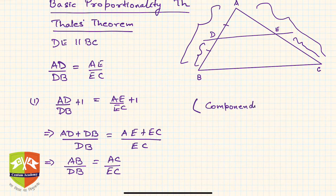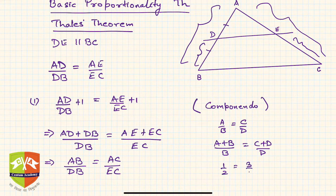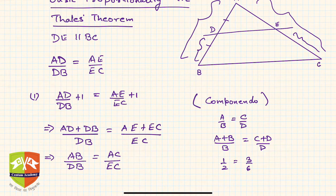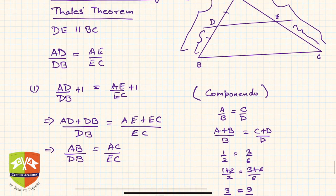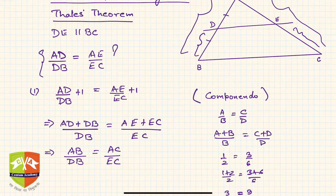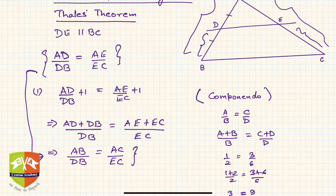Componendo says: if a/b = c/d, then (a + b)/b = (c + d)/d. For example, 1/2 = 3/6, so by componendo, (1+2)/2 = (3+6)/6, which gives 3/2 = 9/6 — both equal to 3/2. So from the componendo rule, we converted one ratio into this new ratio, and by BPT we can state this corollary directly.